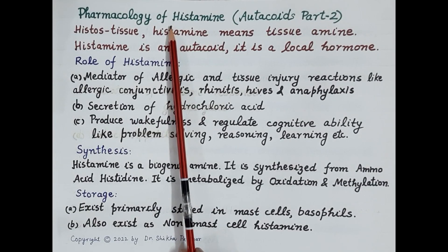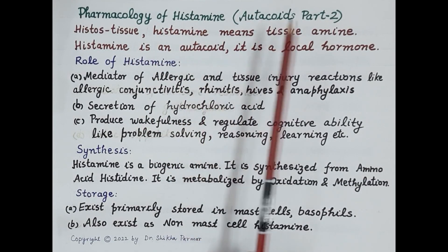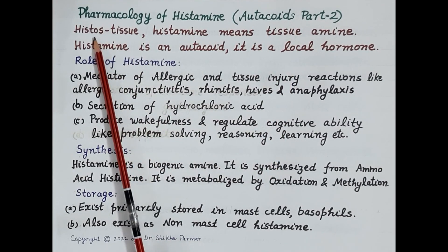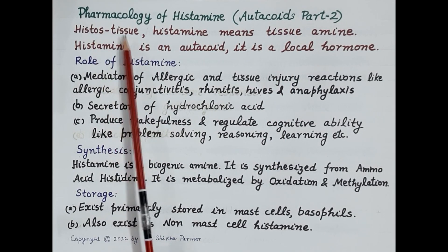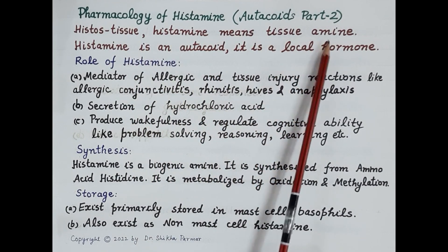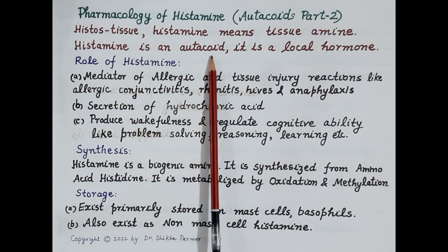Hello students, today we are going to discuss pharmacology of histamine. This video is second in the series of videos on autocoids. The word histamine is derived from the Greek word 'histos,' which means tissue, so histamine means tissue amine. Histamine is a biogenic amine that is produced by the tissues.